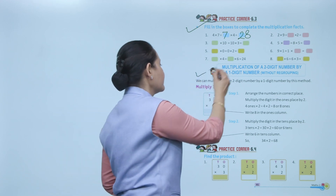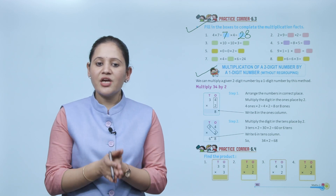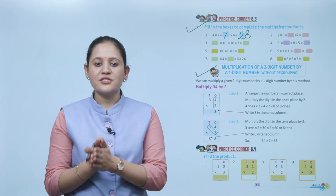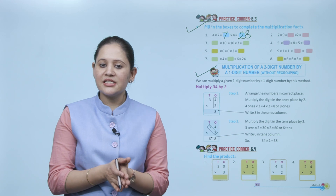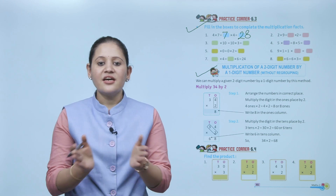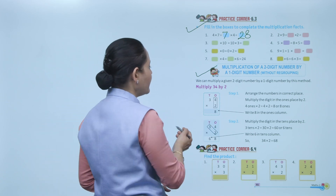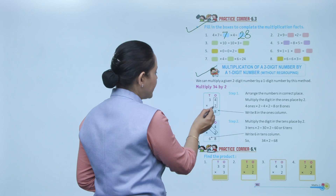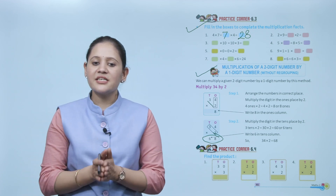Next: multiplication of a two-digit number by a one-digit number without regrouping. Multiply 34 by 2. Step 1: multiply the digit in the ones place by 2 — 4 ones into 2 equals 8 ones; write 8 in the ones column. Step 2: multiply the digit in the tens place by 2 — 3 tens into 2 equals 6 tens; write 6 in the tens column. So 34 into 2 equals 68.